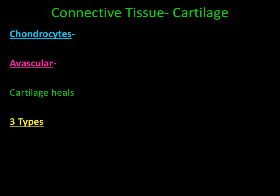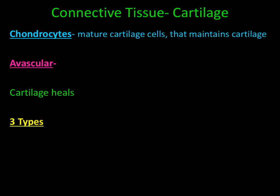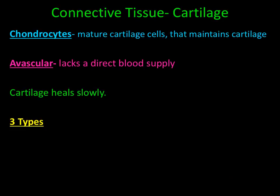The third type of connective tissue is cartilage. The type of cell found in cartilage is a chondrocyte, a mature cell that maintains cartilage. Cartilage is an avascular tissue, meaning it lacks a direct blood supply, and because of this, cartilage heals very slowly. There are three types of cartilage: hyaline cartilage, fibrocartilage, and elastic cartilage.